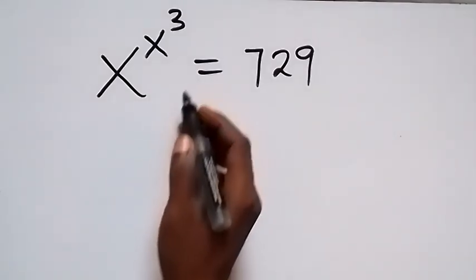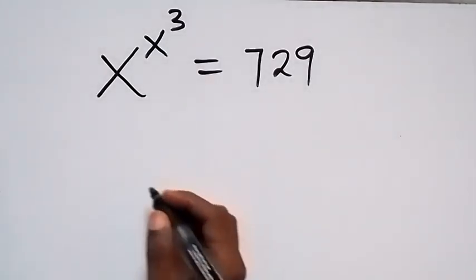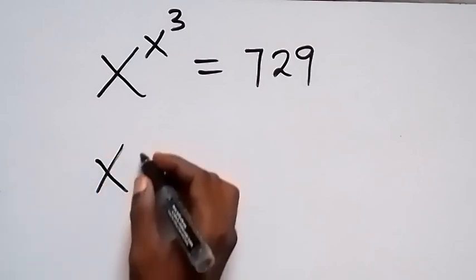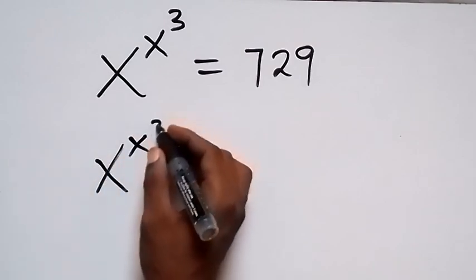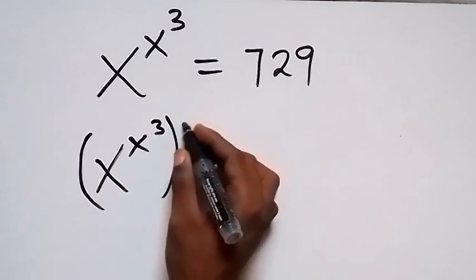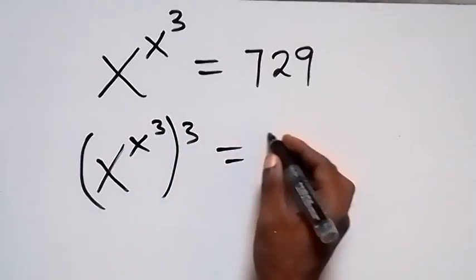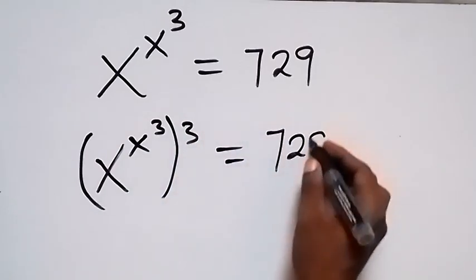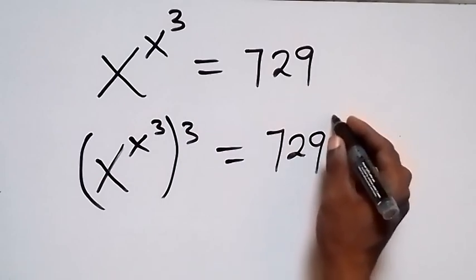Now, let's raise both sides to power 3. We have X raised to power X raised to power 3, then everything raised to power 3. On the right side, we raise to power 3 as well.